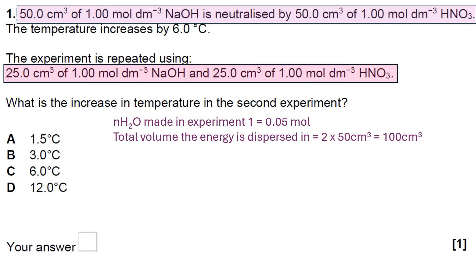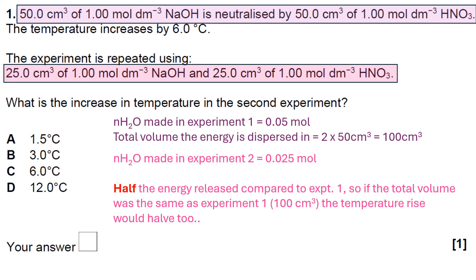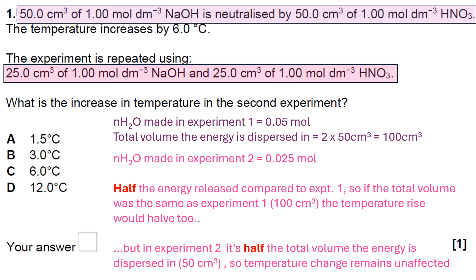Looking at the pink highlighted version, in experiment two the number of moles of water made is 0.025. That's because we've got 25 cm³ of the same concentration of NaOH, or 25 cm³ of the same concentration of HNO₃. Basically, half the energy is released compared to experiment one. If the total volume in experiment two were the same, the temperature rise would halve as well. But the volume is also half — so the temperature change remains unaffected.